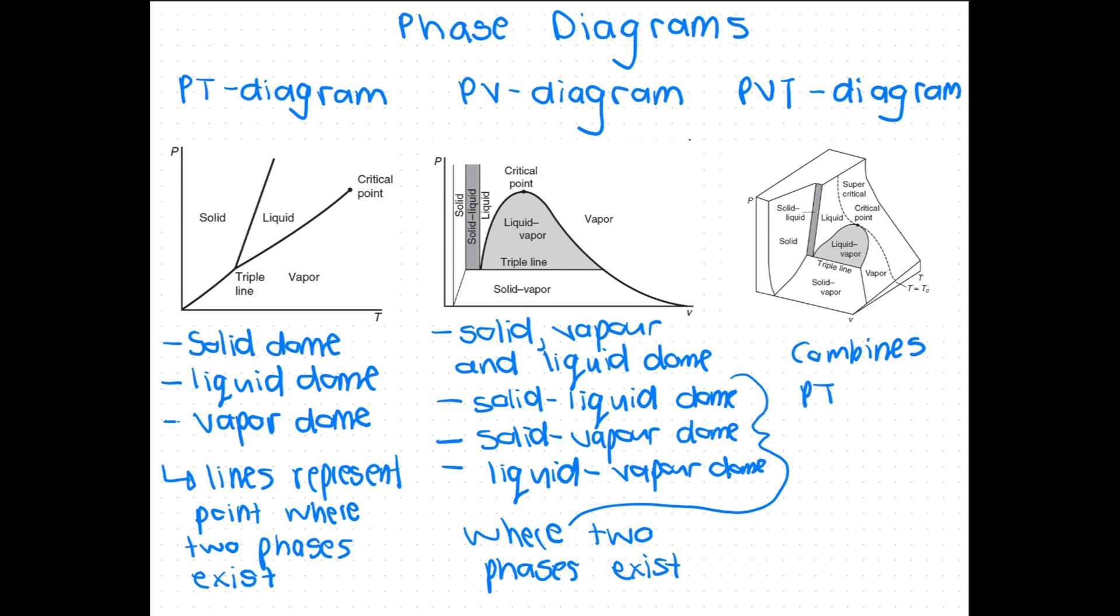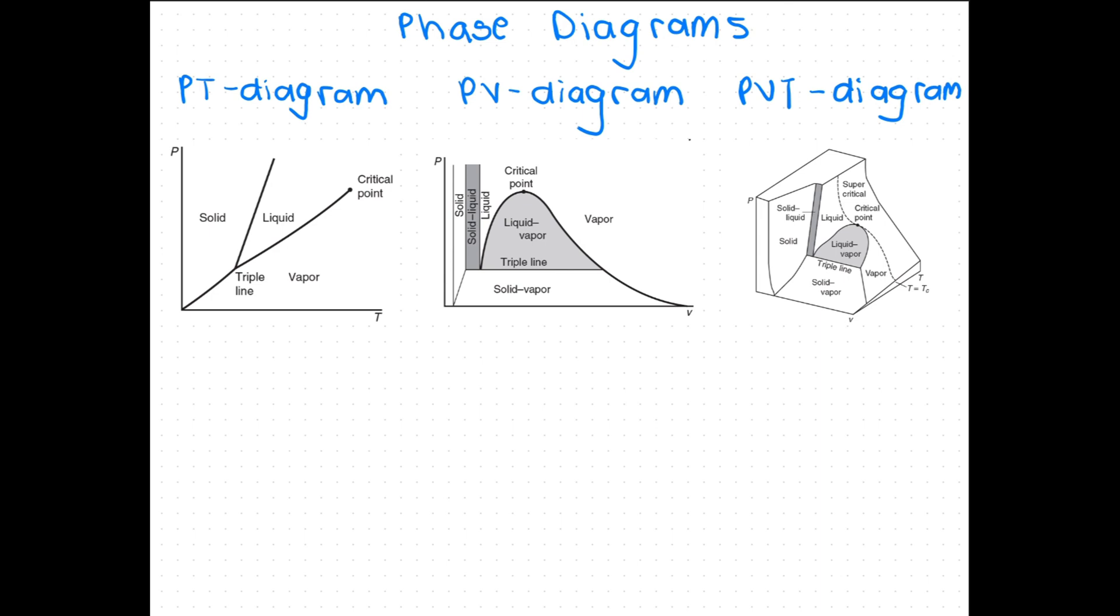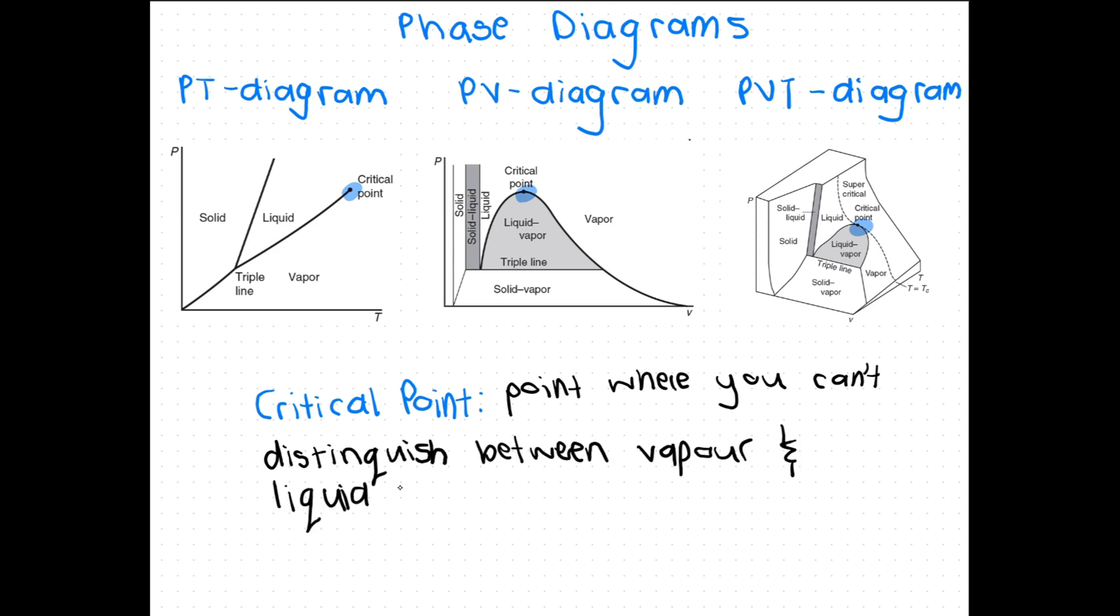Lastly is the PVT diagram which combines both the PV and the PT diagram in a 3D representation. On all these diagrams a critical point is indicated. This point is indicated at the top of the liquid vapor dome. It is the point where you can't distinguish between the vapor and liquid phase.